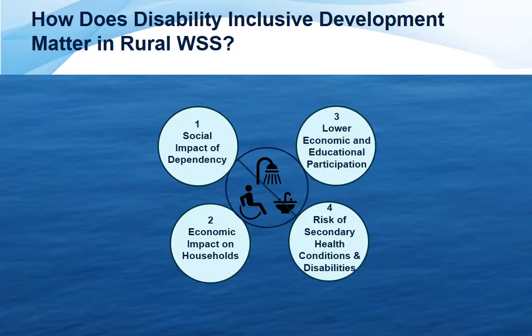Households with persons with disabilities often have to pay additionally out-of-pocket for expenses related to structural modification and various additional costs associated with changing the design. Regarding economic and educational participation, lack of access to WASH impacts school attendance or job opportunities. Finally, there are risks of secondary health conditions and disabilities, since poor WASH can lead to serious health conditions and infections.